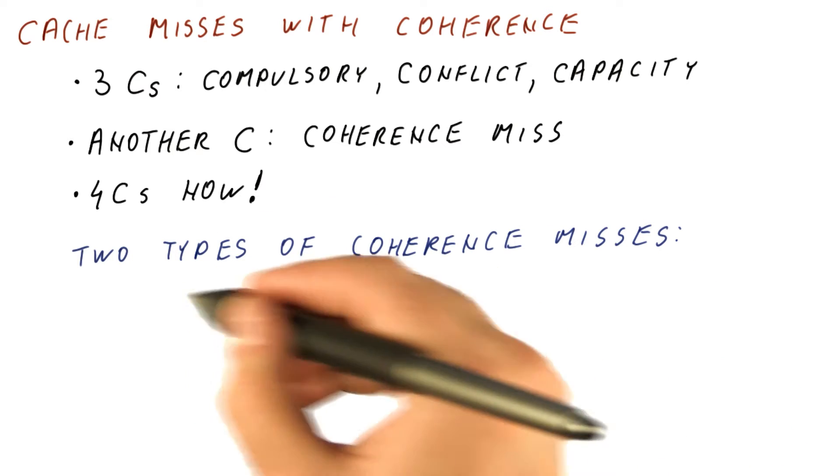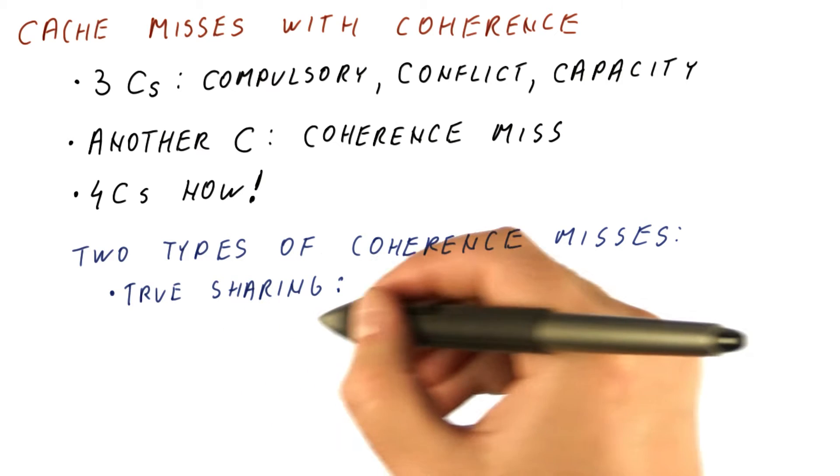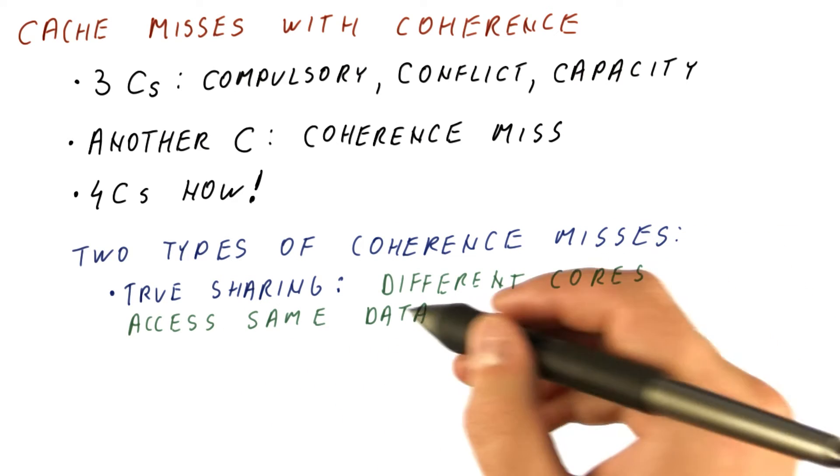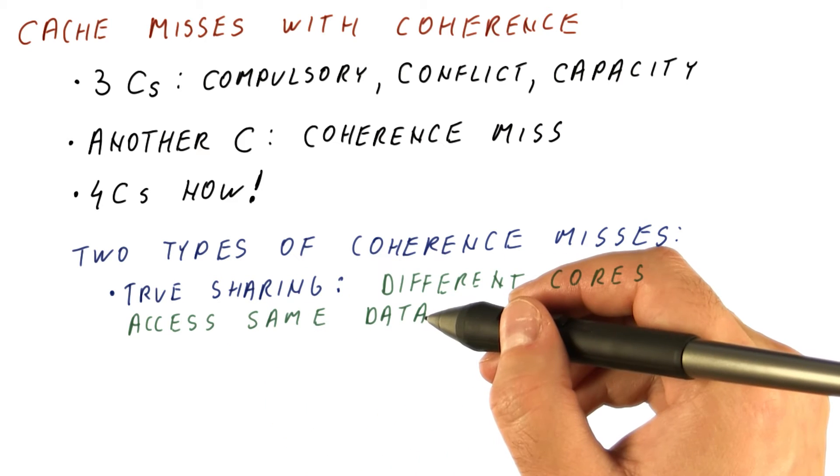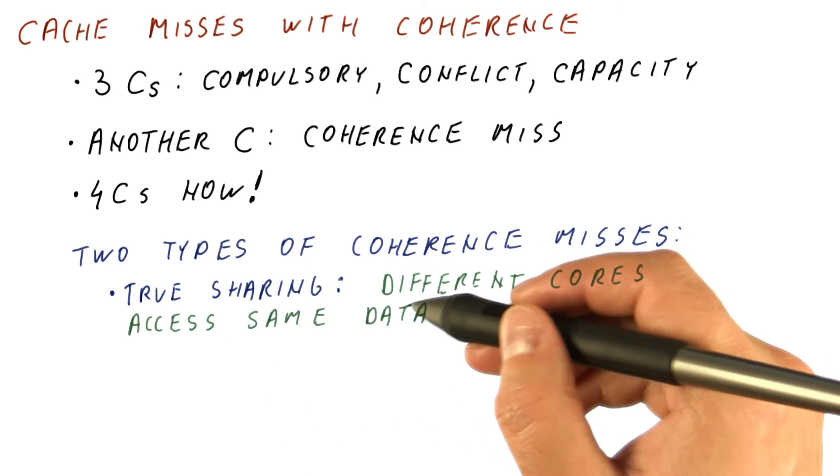There are really two types of coherence misses. What we have seen so far is the true sharing type of miss, which occurs when different cores access the same data. So naturally, we have to perform coherence, and thus have some misses.